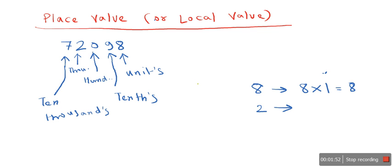Now let's see what will be the place value of 2. Place value of 2 will be 2 multiplied by 1,000, as it is located in the 1,000th place. So we have the result as 2,000.